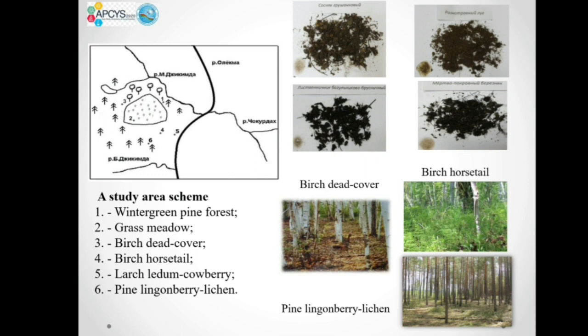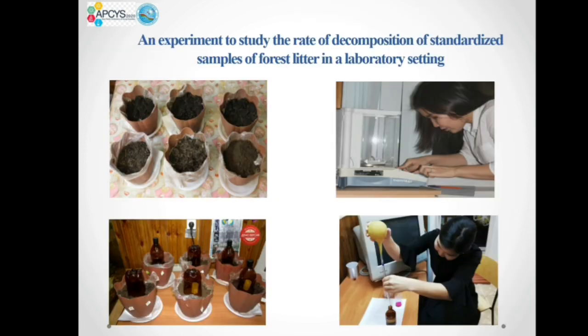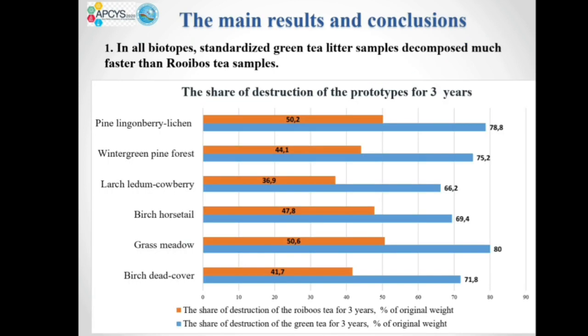Wintergreen pine forest, cowberry pine forest, birch and larch forest are predominating. On these slides, you can see the share of tea sample decomposition during the three-year period. In all biotopes, standardized green tea litter samples decomposed much faster than rooibos tea samples.